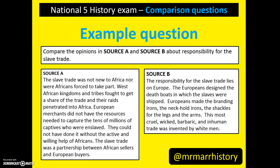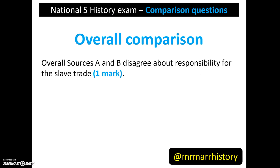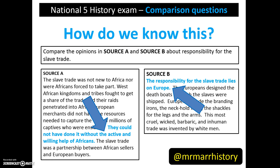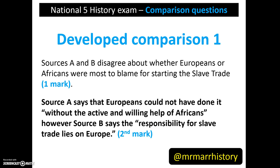Let's look at an example question. This one is drawn from the Atlantic slave trade topic and considers who was most responsible for the slave trade. We begin by gaining a mark simply for identifying that the sources generally disagree about responsibility for the slave trade. We then go into a simple comparison — in this case, we say that sources A and B disagree about whether it was Europeans or Africans that were most to blame for starting the trade. We know this because of these two quotes taken from the sources. Because we know where the quotes came from, we can gain an extra mark. So in our developed comparison, after we have identified the specific issue we are comparing, we then simply include the quotes that prove this, gaining us another mark.